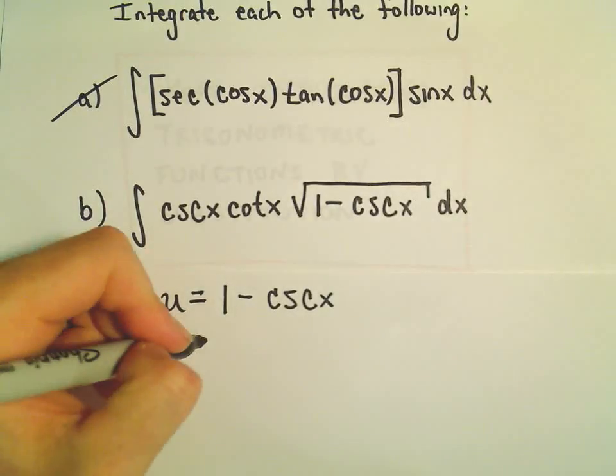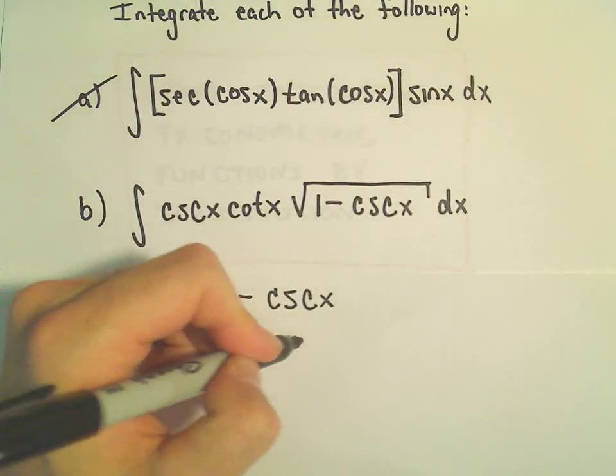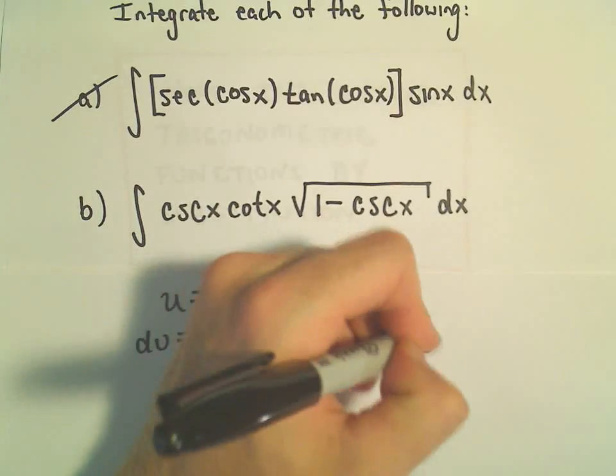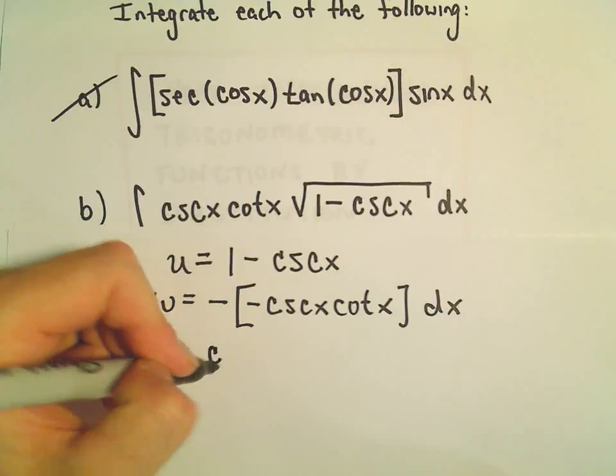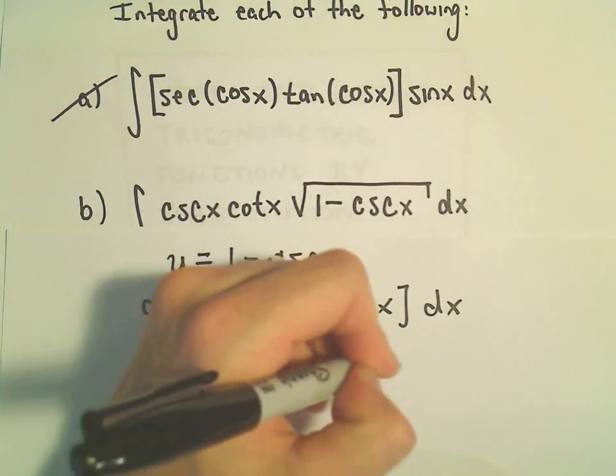So our du, let's see, we would have negative. The derivative of cosecant is negative cosecant x cotangent x. And then we'll tack on our dx. Well, the two negatives make a positive, so our du actually gives us exactly what we need.